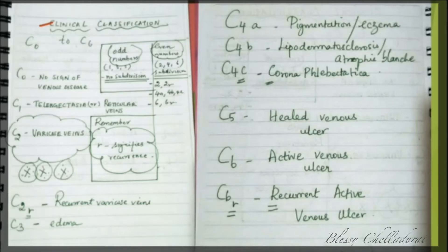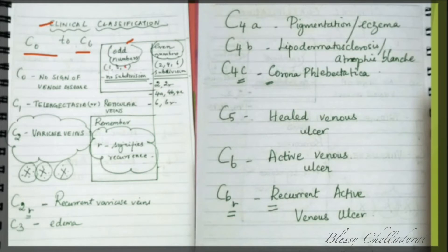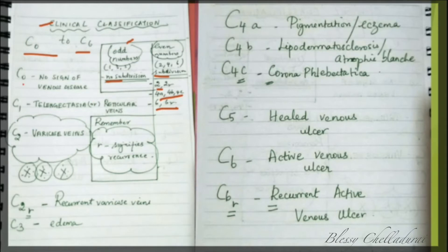The clinical classification starts from C0 to C6. From C0 to C6, take out all the odd numbers — 1, 3, and 5 — they have no subdivisions. The even numbers 2, 4, and 6 have subdivisions: C2 and C6 have recurrent subdivisions (denoted by R), and C4 has A, B, and C subdivisions.